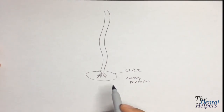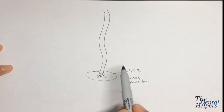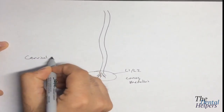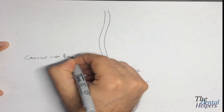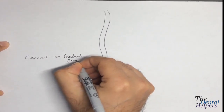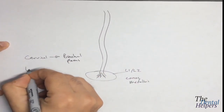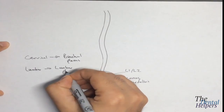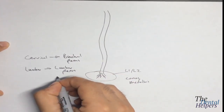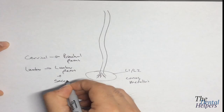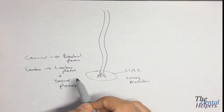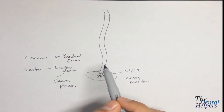Around the cervical and lumbar regions, we're going to have two enlargements. In the cervical region, this is going to give rise to the brachial plexus. The lumbar levels are going to give rise to the lumbar plexus and the sacral plexus. We'll get into other videos explaining what the brachial plexus and lumbar plexus are — that will mainly be found in the gross anatomy playlist.